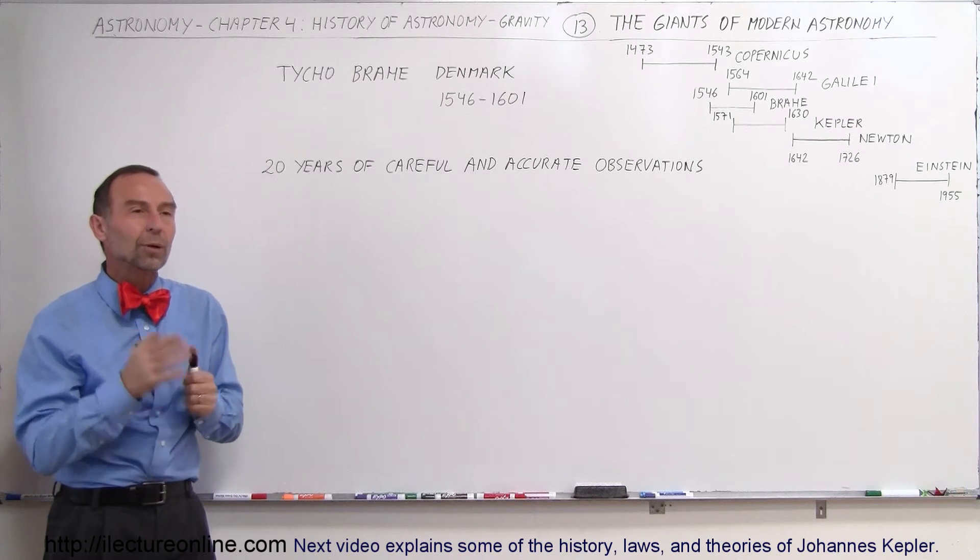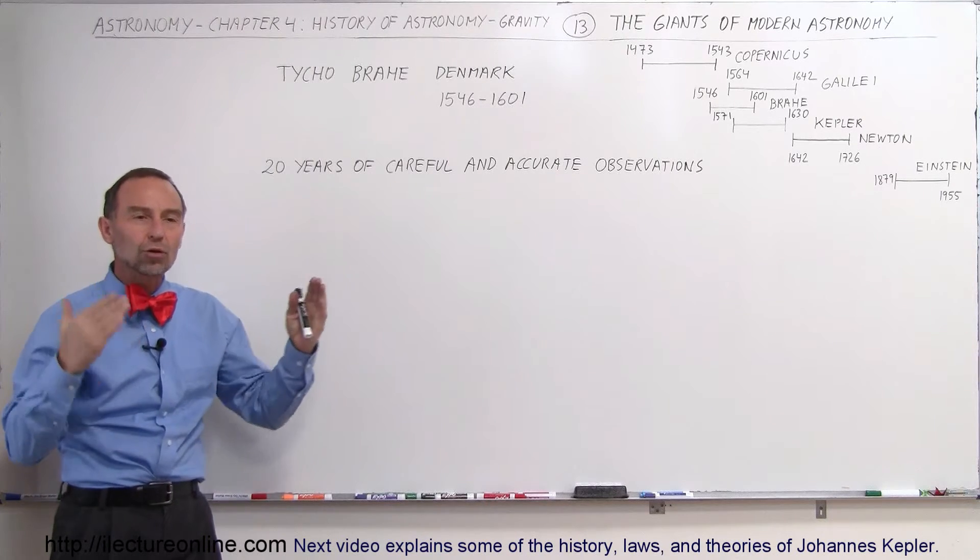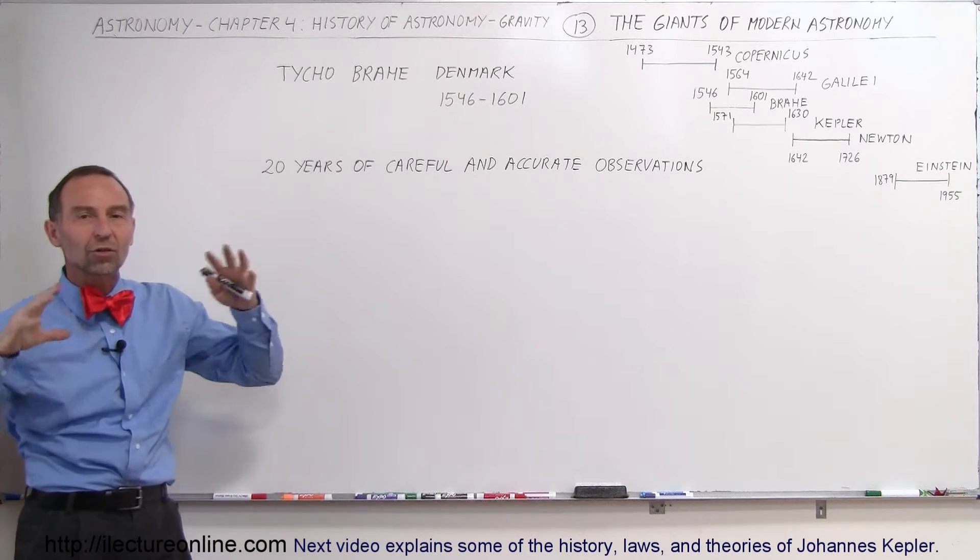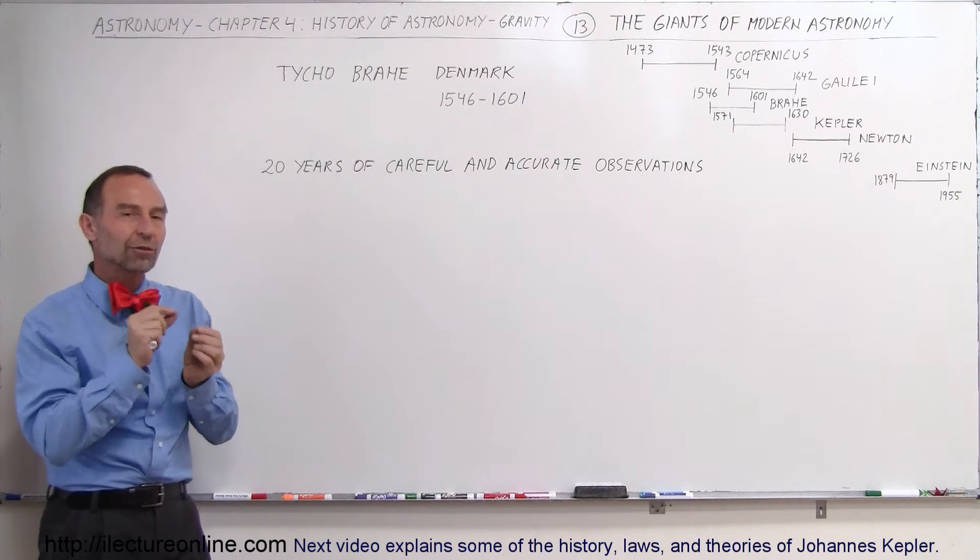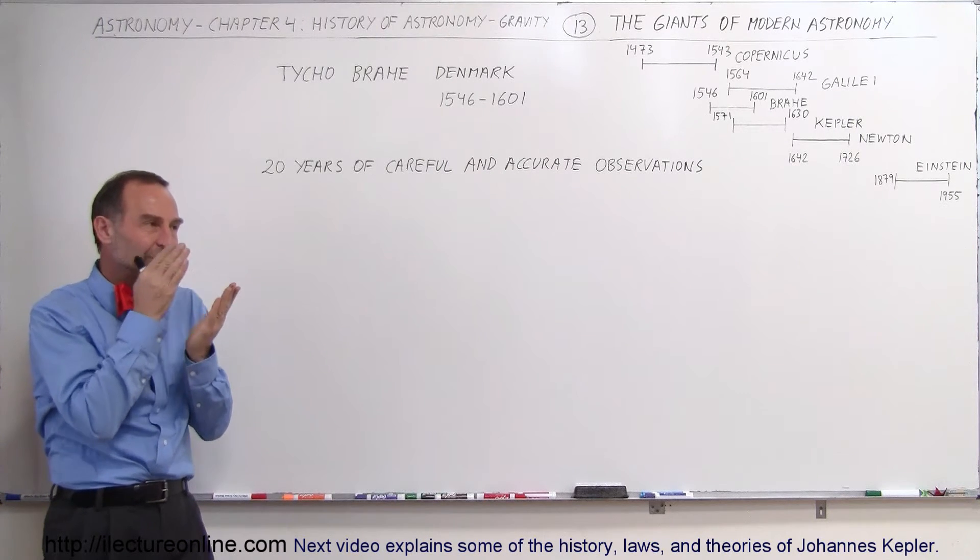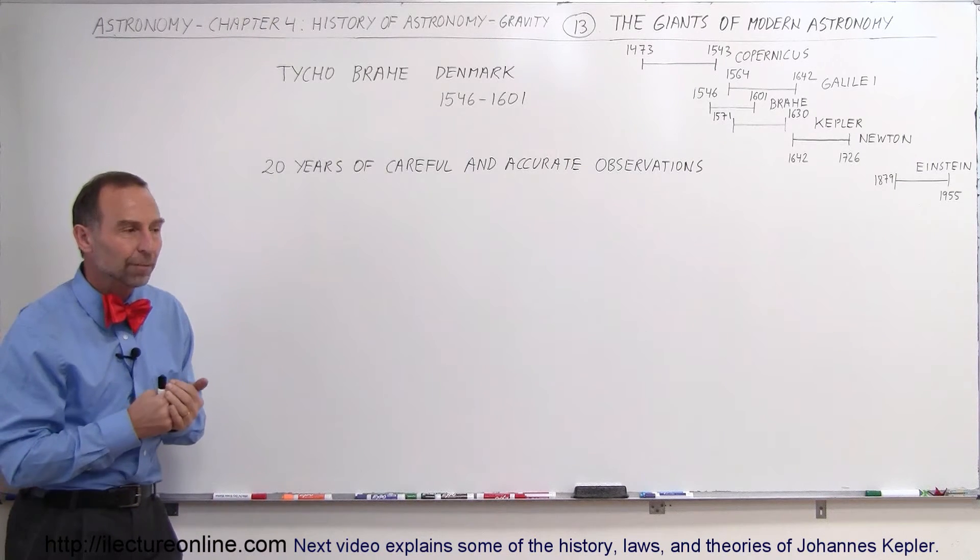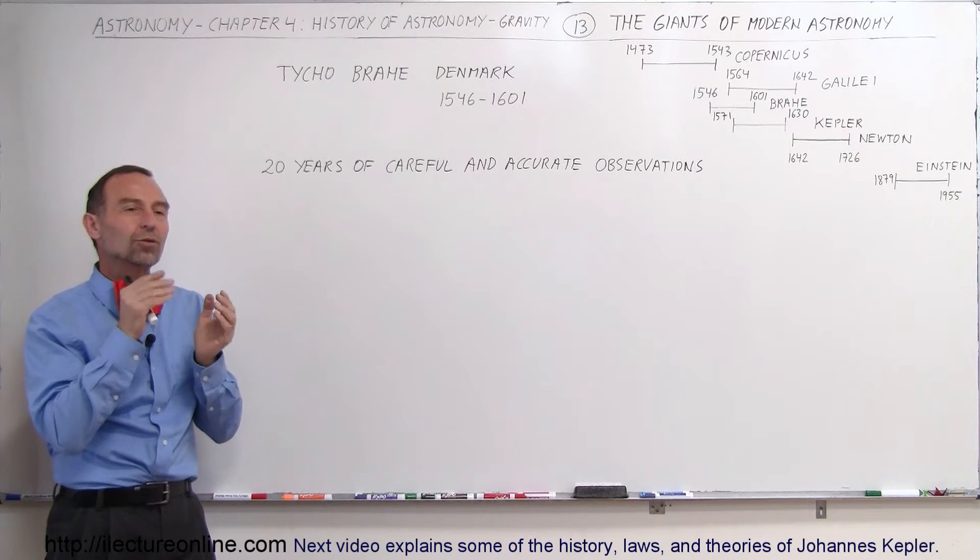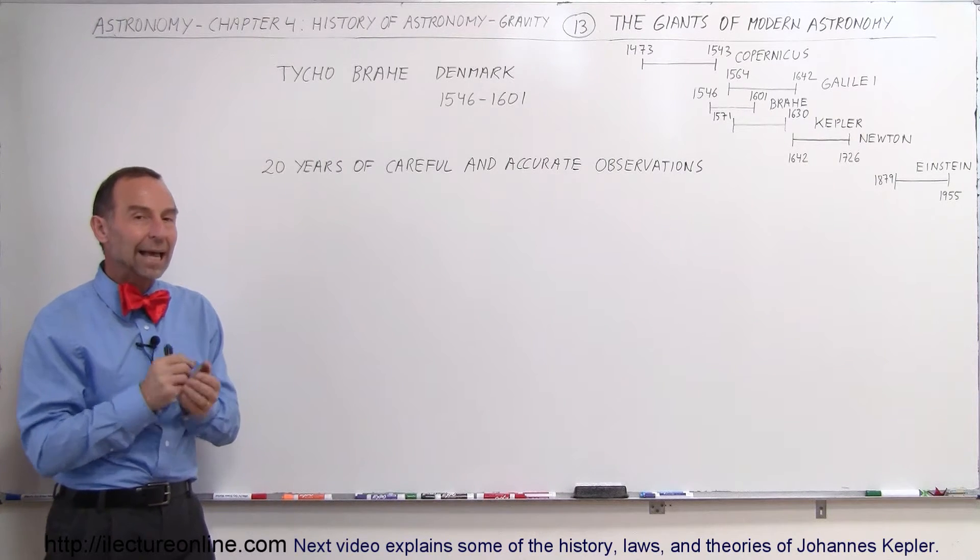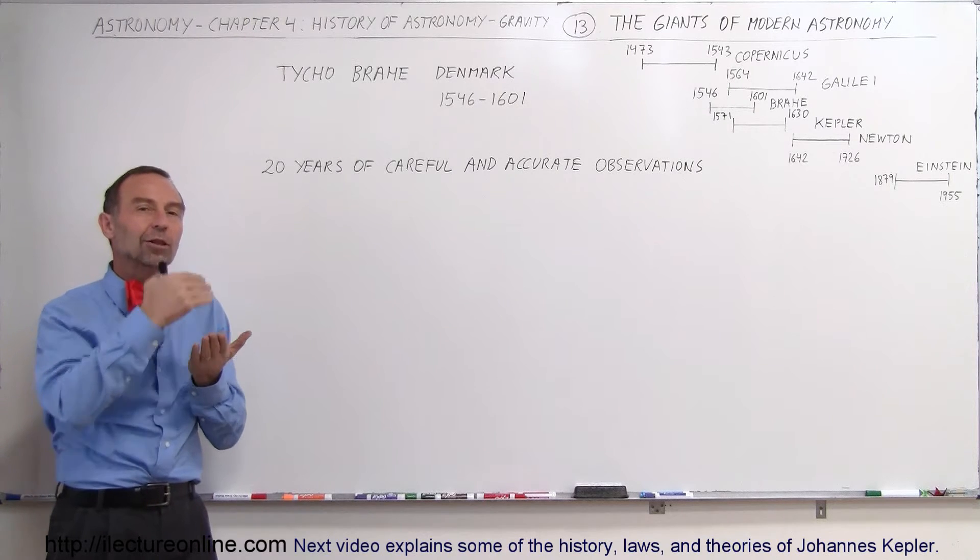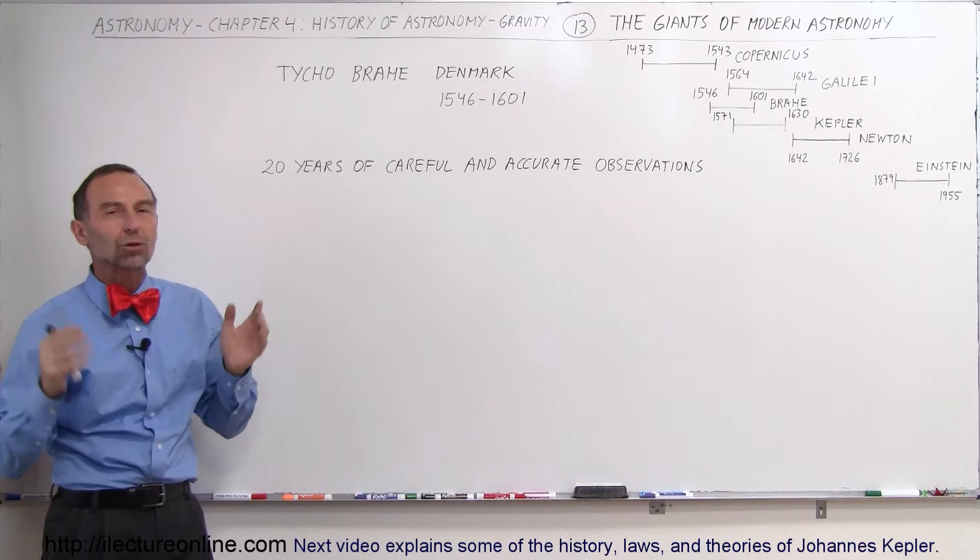He didn't have a telescope, but he was able to very carefully measure the position of the planets using various methodologies. His observatory was specially made so that he could make such careful angle measurements for exactly where the planets were at any time during every night that he was able to observe them, accurate down to one minute of arc, a tremendous feat. And not only that, he very carefully logged those observations on a night-after-night basis for a period of about 20 years.